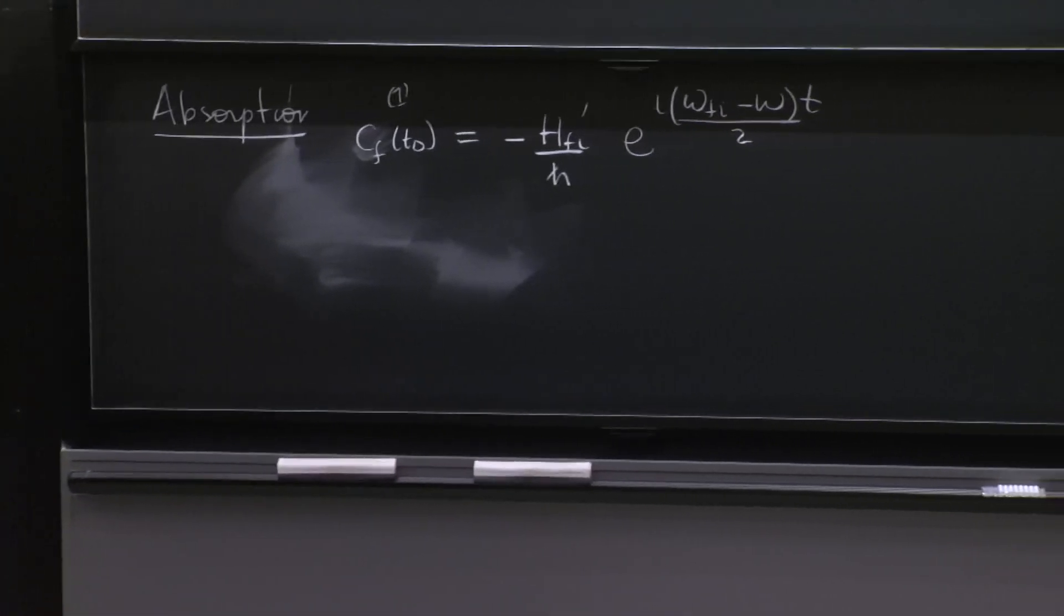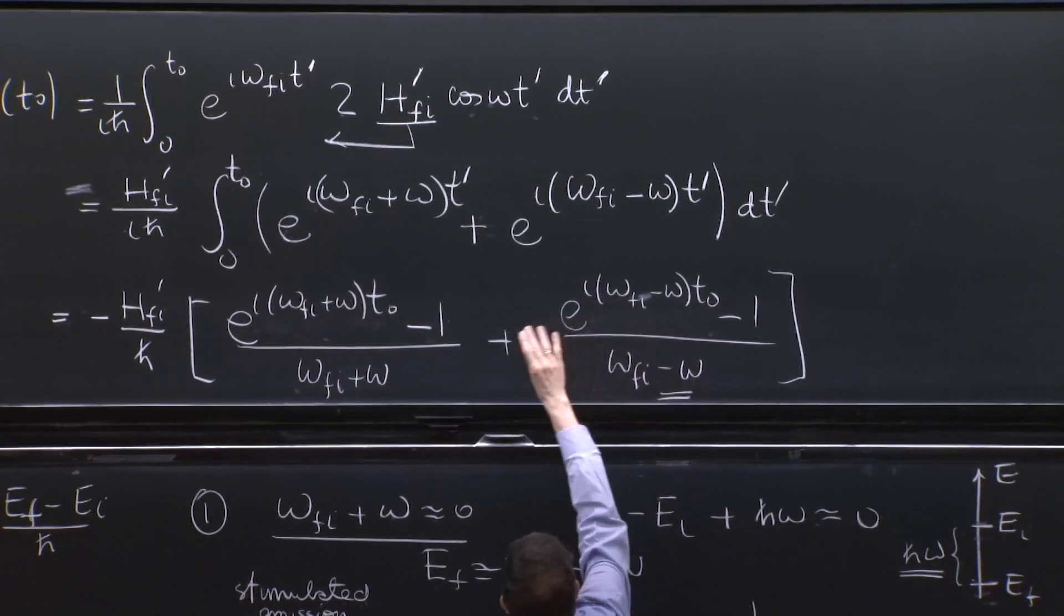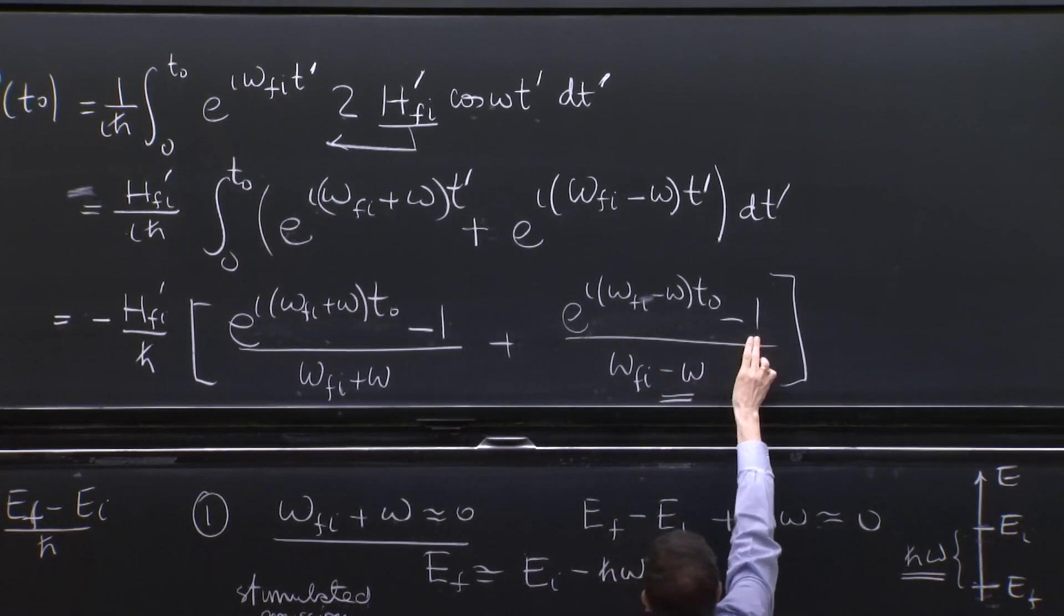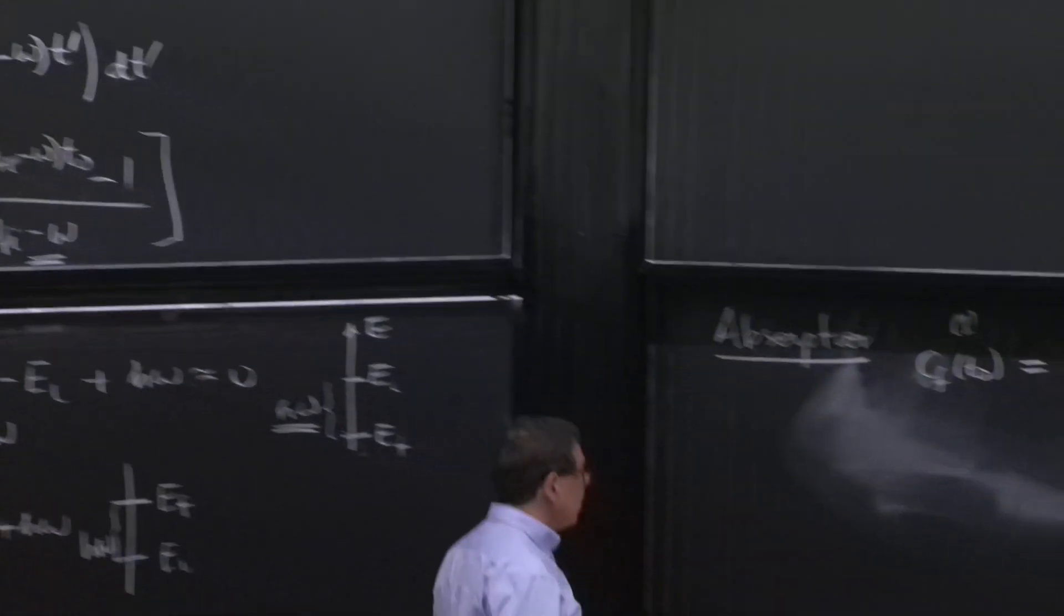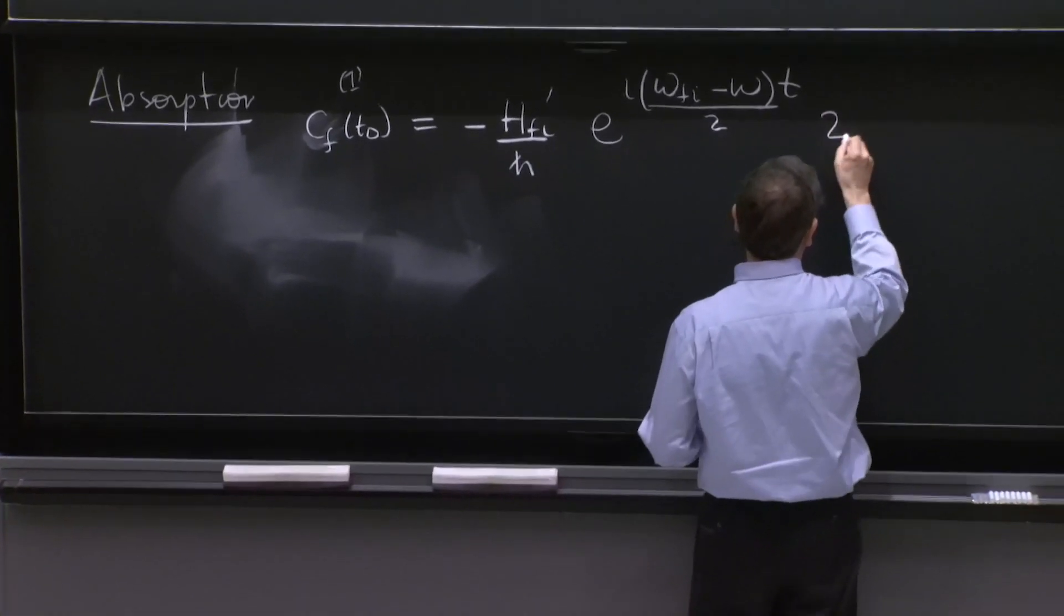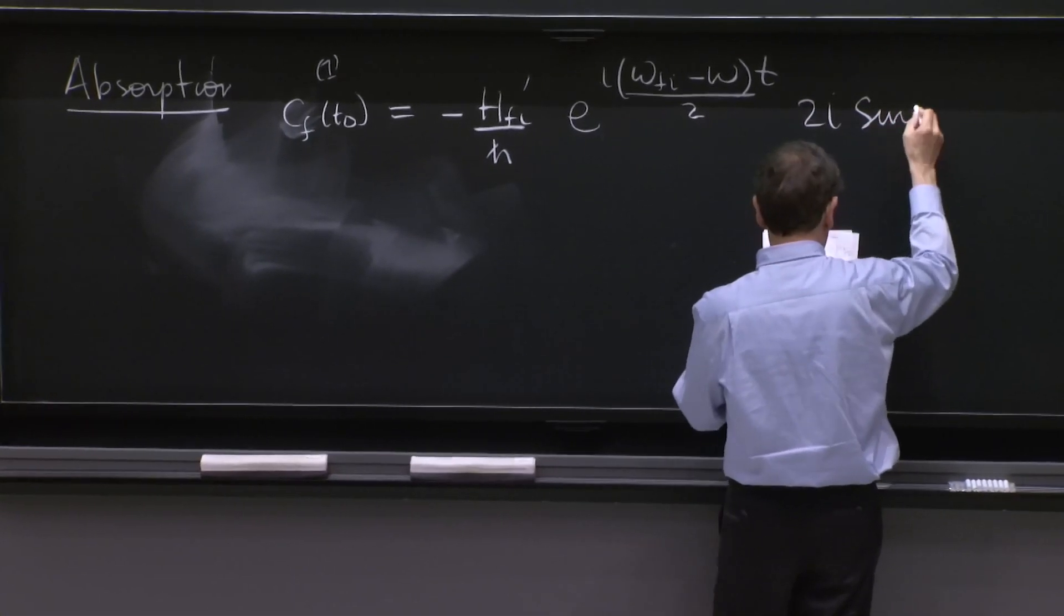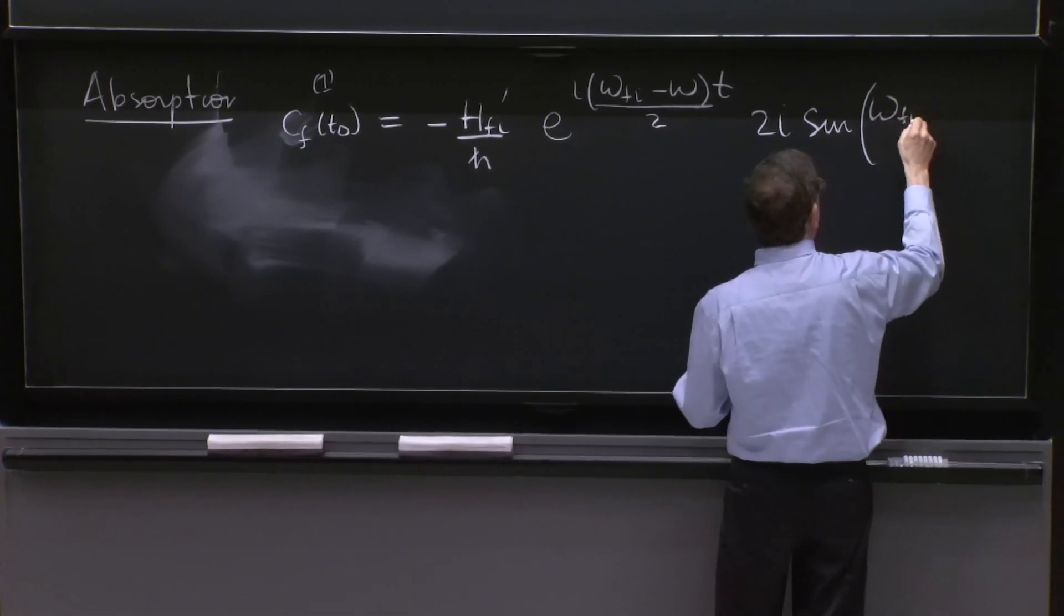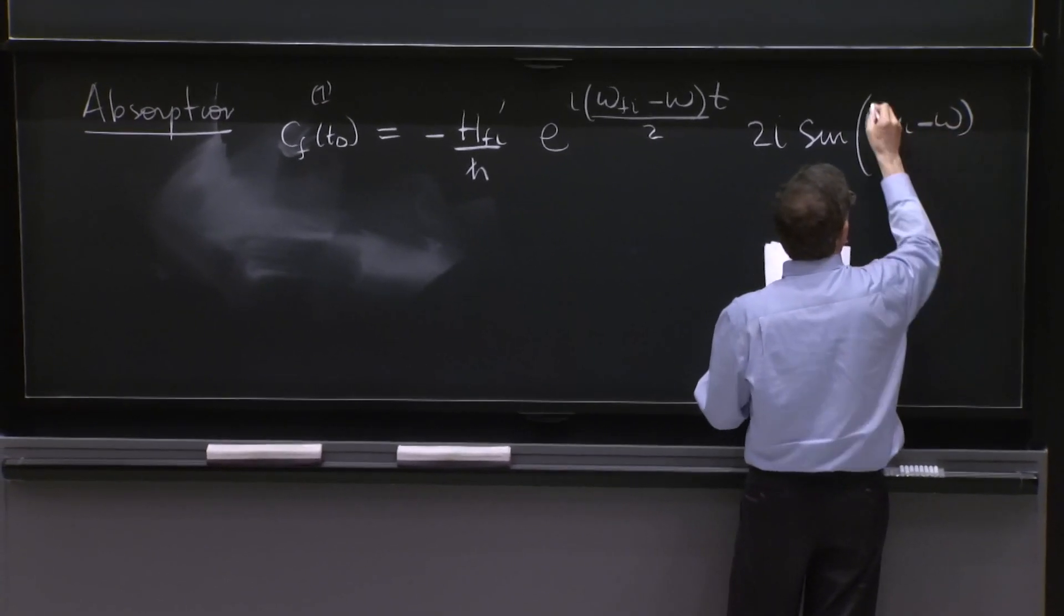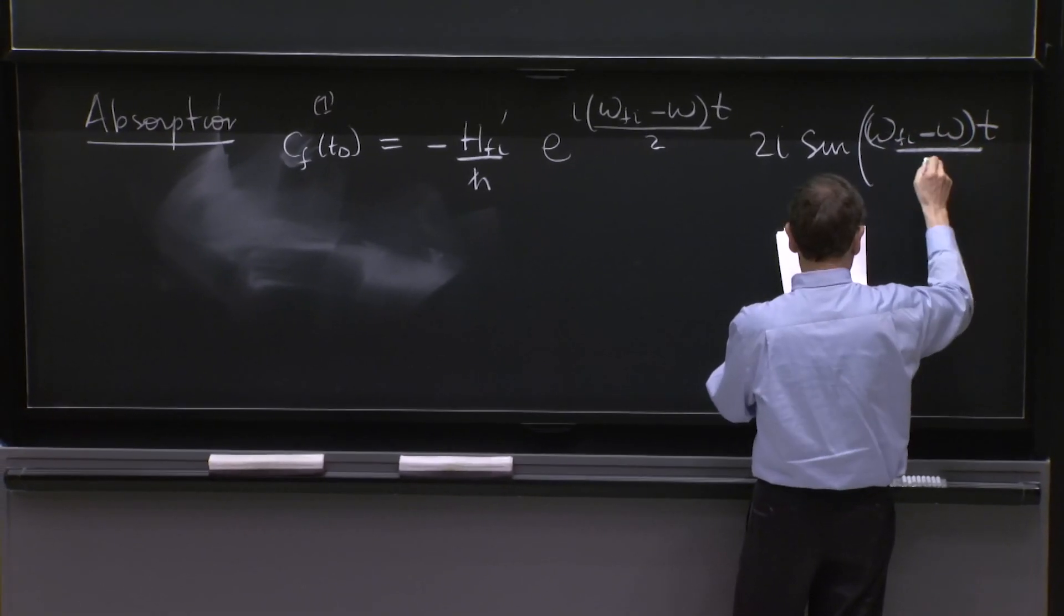So you don't see that term, of course. But I'm going to take out half of this phase so that I get the sine function out here. So I took out half of the phase. And then I get 2i sine omega fi minus omega t over 2.